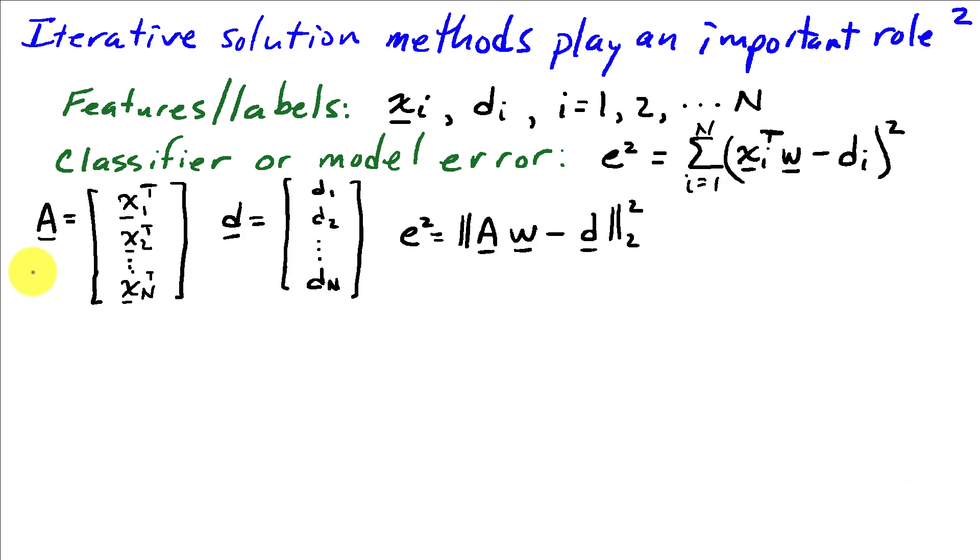So we can reformulate this again as a matrix problem where we define A to consist of rows given by the features, d consists of the labels as a vector, and then our squared error is just the two norm of the difference between Aw and d.